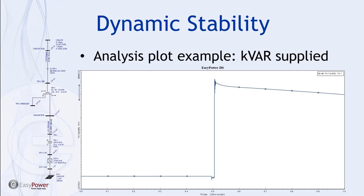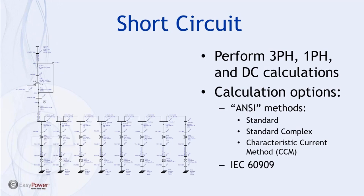Moving on to short circuit — EasyPower provides flexibility to perform three-phase, single-phase, and DC short circuit calculations all within the same electrical one-line. For three-phase calculations, you have two choices of methods: the ANSI methods, which are broken into standard, standard complex, and the characteristic current method. The big difference between these methods is how the X/R ratios at different fault locations are calculated.